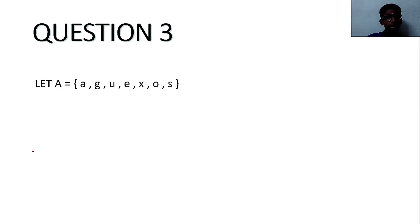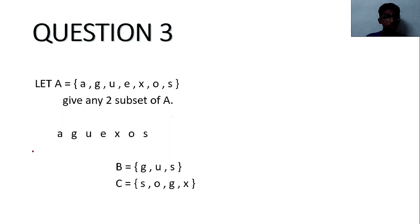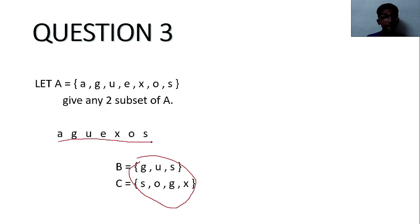Third question: A = {A, G, U, E, X, O, S}. Give any two subsets of A. A subset is a set whose elements all belong to set A. We write subsets B = {G, U, S} and C = {S, O, G}. There are no other alphabets outside of A in these sets, so B and C are subsets of A.